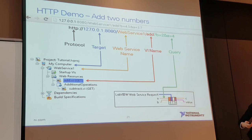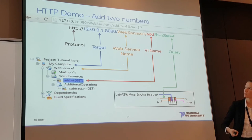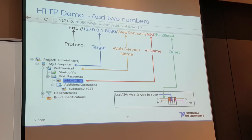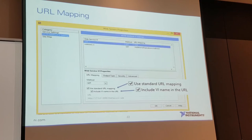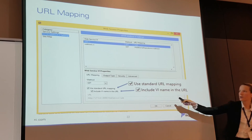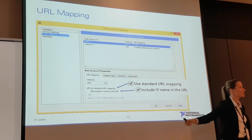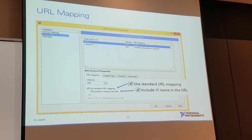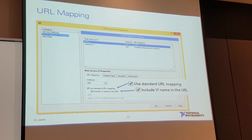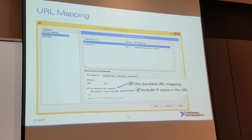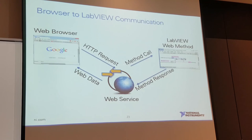We've mapped what we did in the project to the actual URL address. Inside web service properties — right-click and go to Properties — there is a checkbox for 'use standard URL mapping' and 'use the VI name in the URL.' We have the option to expose this by checking this checkbox. We can uncheck it if we don't want the website to access particular VIs, and instead want to control how we handle queries from the website.